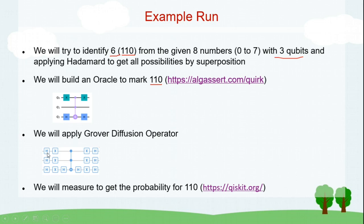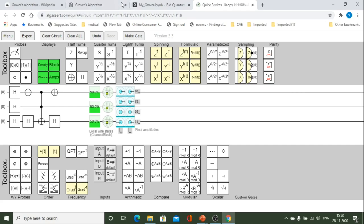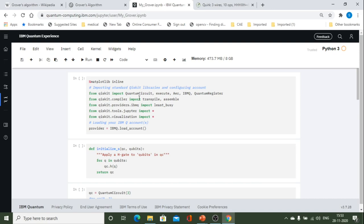Now, we have to apply Grover diffusion operator. That has been given like this. A set of Hadamard, set of X, Hadamard, controlled not, Hadamard, set of X, set of Hadamard. It's like a mirror image of what we are doing on the left side. The total one, we will try to do it in Qiskit itself. Already I have made it to save time. We will go and see on the IBM site.